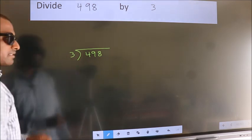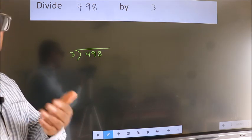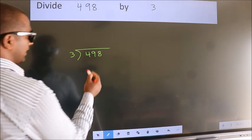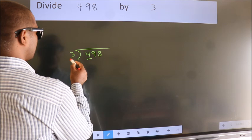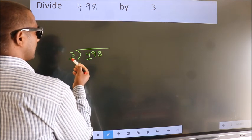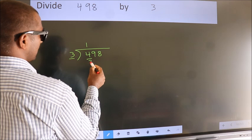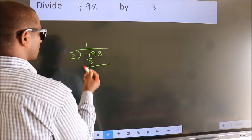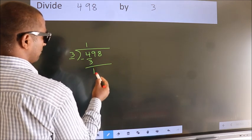This is your step 1. Next, here we have 4, here 3. A number close to 4 in 3 table is 3 once 3. Now, we should subtract. We get 1.